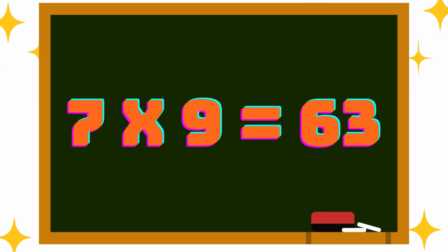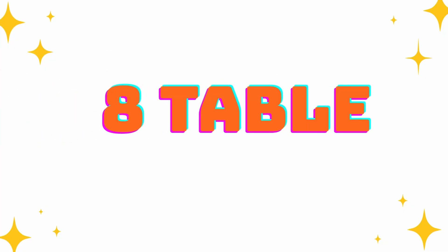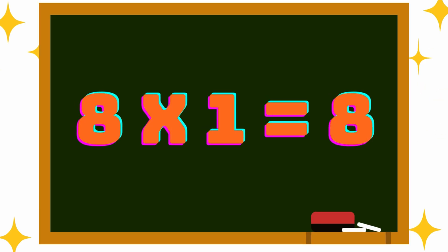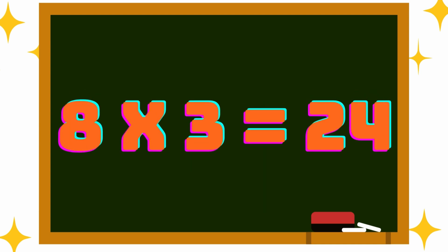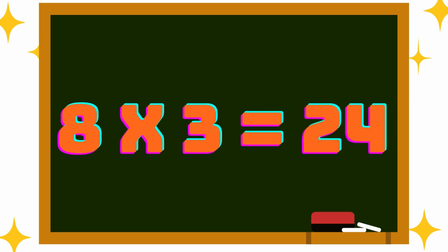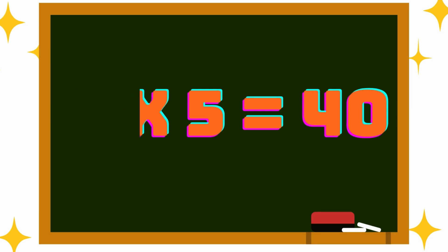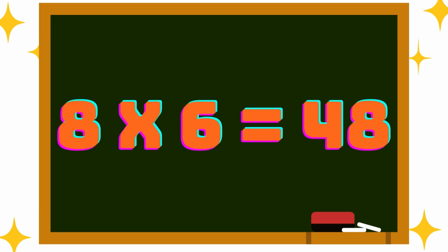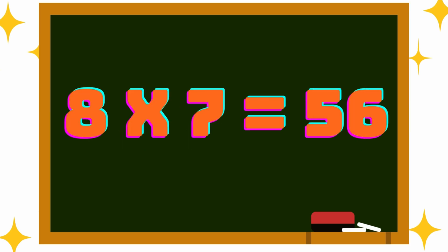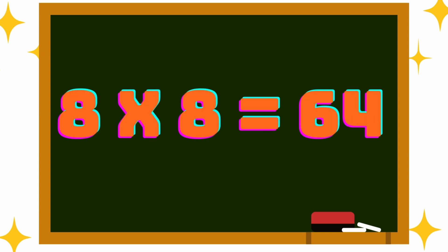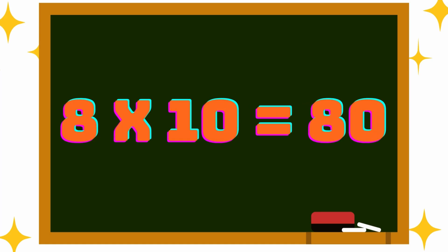7 nines are 63. Next one, 8th table. 8 ones are 8. 8 twos are 16. 8 threes are 24. 8 fours are 32. 8 fives are 40. 8 sixes are 48. 8 sevens are 56. 8 eights are 64. 8 nines are 72. 8 tens are 80.